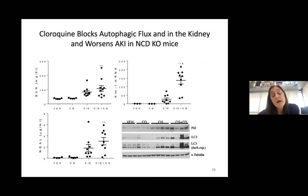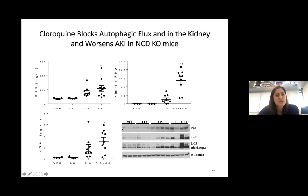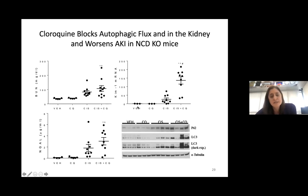Zheng Dong's group in Georgia had found that when you inhibit autophagy, it makes cisplatin-induced kidney injury worse — so autophagy plays a protective role in this model. We hypothesized that's why mice lacking neutral ceramidase were protected. My student Sophie Sears went on to inhibit autophagy with chloroquine. When she did so, we didn't see much change in blood urea nitrogen, but we did see a major change in KIM-1 and NGAL — more sensitive markers — suggesting the neutral ceramidase knockout mice are protected, at least in part, through increased autophagy.